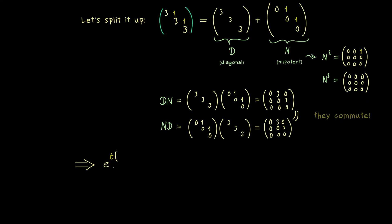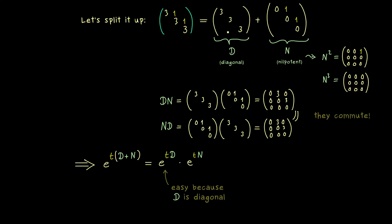What we want to calculate is e to the power t times (D plus N), where D plus N is our original Jordan block. Because the two matrices commute, we can split the exponential: we get e to the power tD times e to the power tN. The first factor is easy to calculate because D is diagonal — we just apply the exponential on the diagonal. The second factor is easy because N is nilpotent, meaning this infinite power series for the exponential is actually just a finite sum. For our example, we already know it stops at N squared.